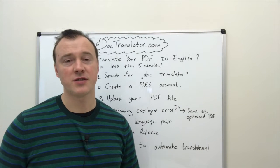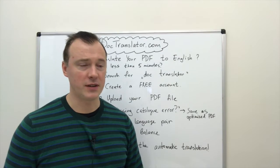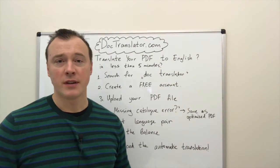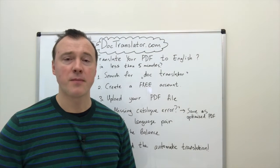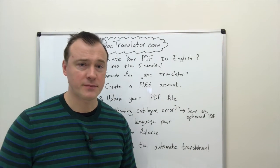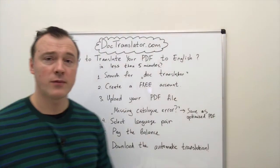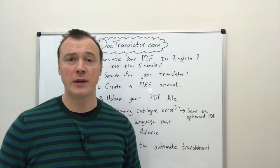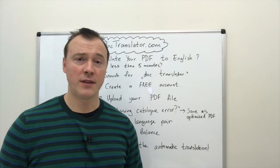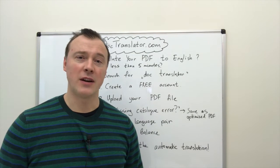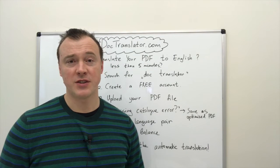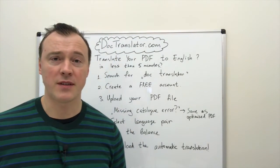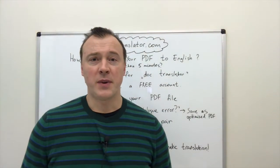Step number five: you will get the price estimate. You need to pay the balance, and lastly, once you pay the balance, the translation will start and a download link will appear. Click on the download link and download your automatic translation to your desktop.